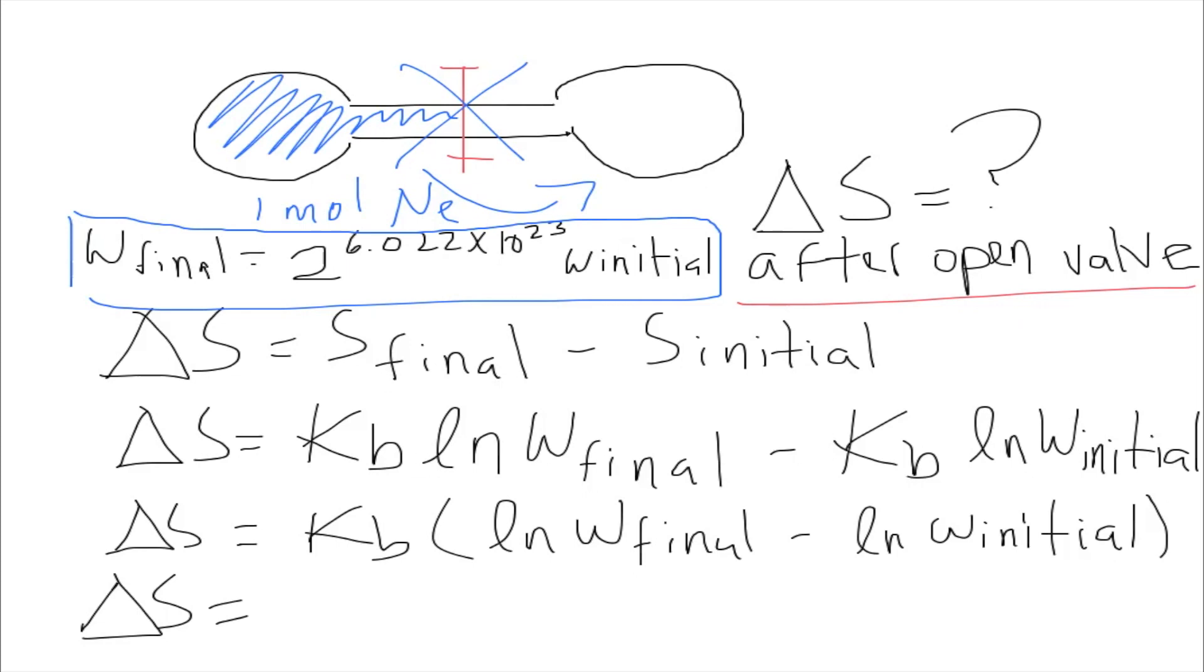So let's see how this works out. Let's plug in everything on the equation. We have our kb outside of the parenthesis, so we can just forget about that for now. Now we have ln of W final, that will be what I wrote right here, so that will be 2 to the power of 6.022 times 10 to the 23 times W initial, and then that's minus ln of the W initial.